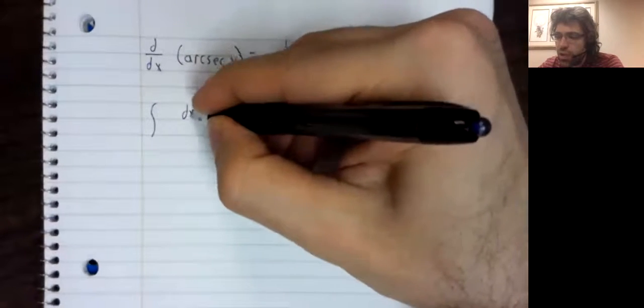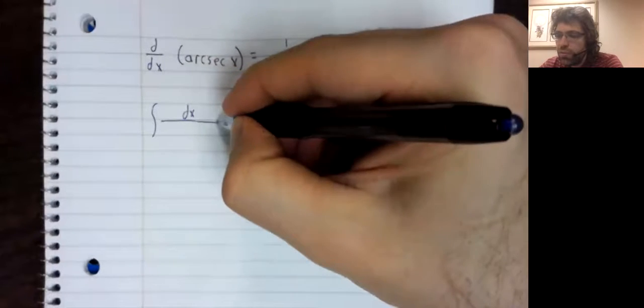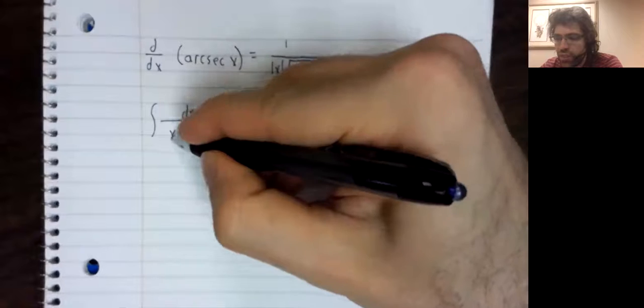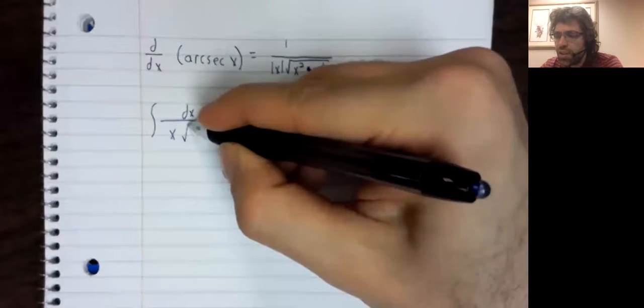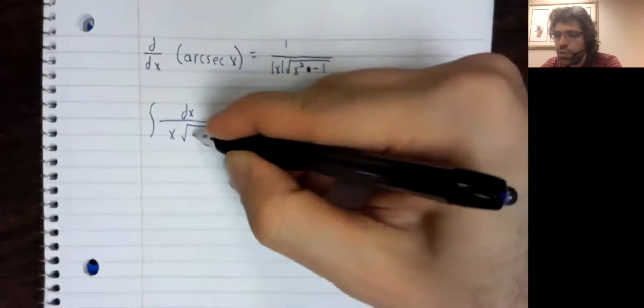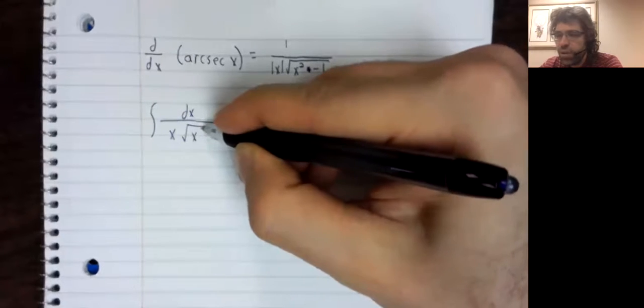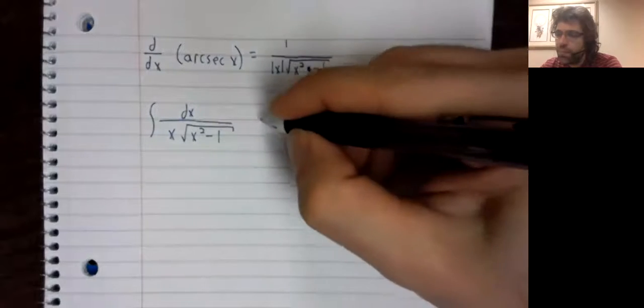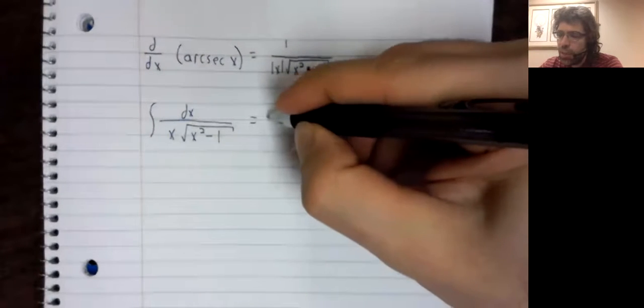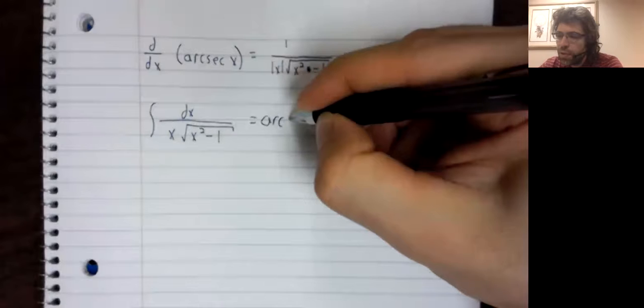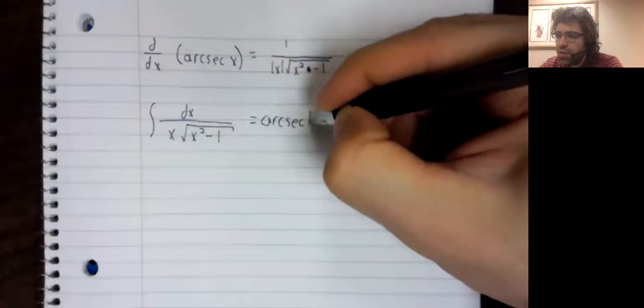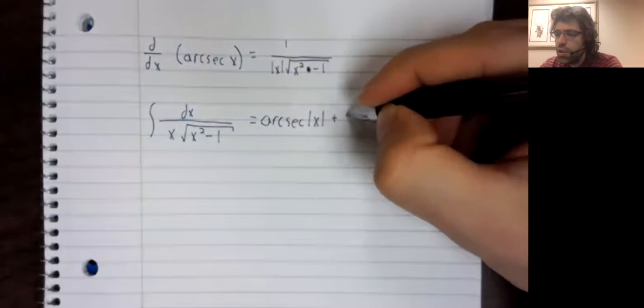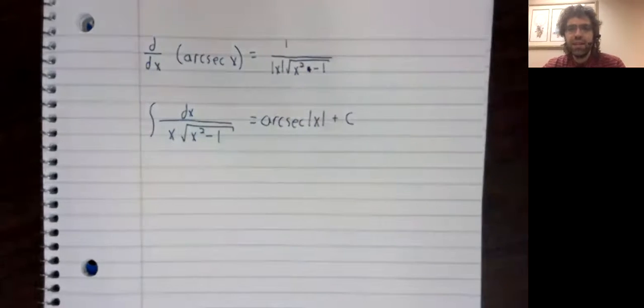In x times the square root of x squared minus one. However, there is an absolute value over here.